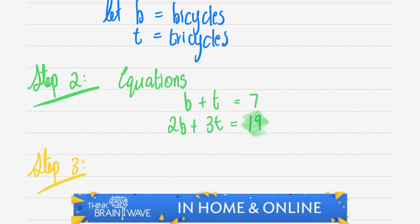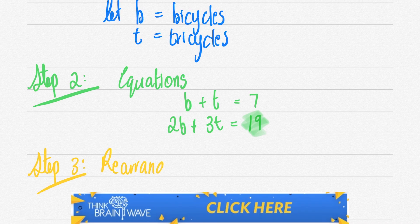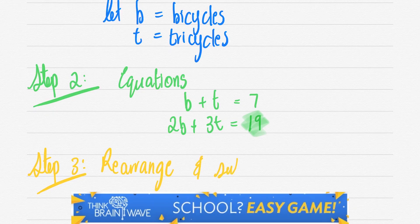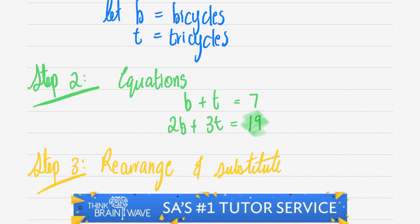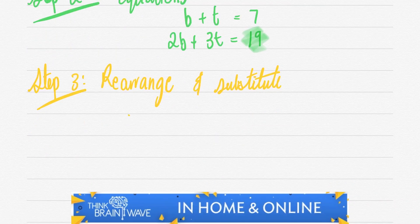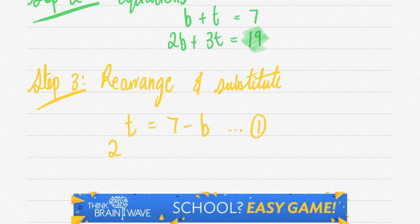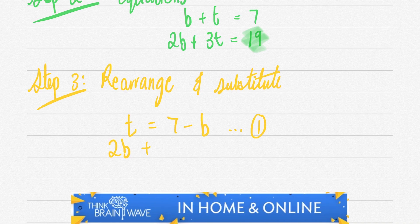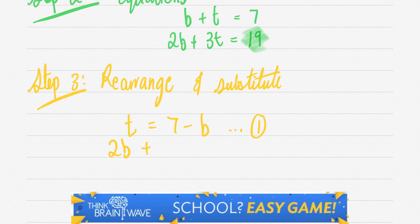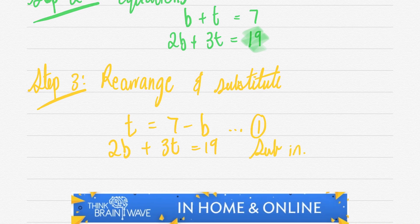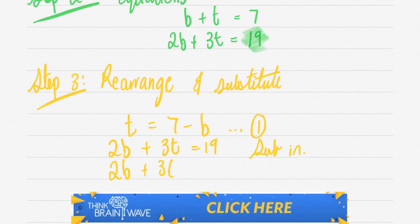Moving forward to step three, we rearrange the equations so we can substitute them into each other and solve. We take b and move it to the right-hand side, changing the sign from positive to negative since it crosses the equals sign, giving us t equals seven minus b. We now substitute this into 2b plus 3t equals 19, so we get 2b plus 3 times (seven minus b) equals 19.